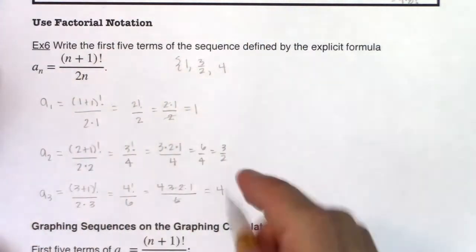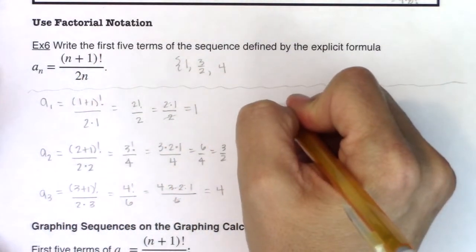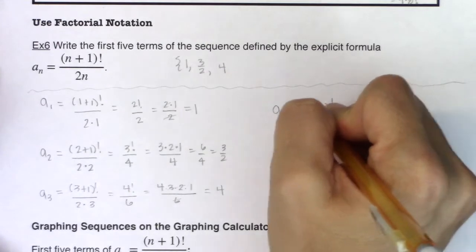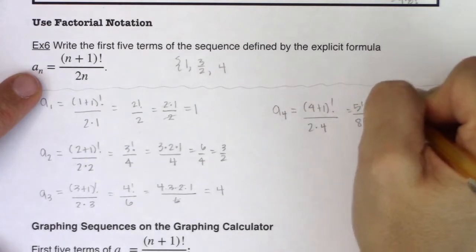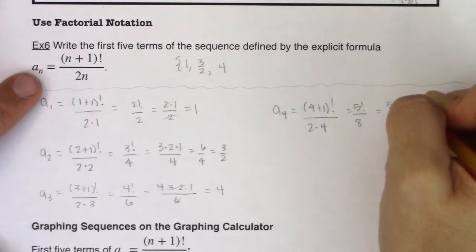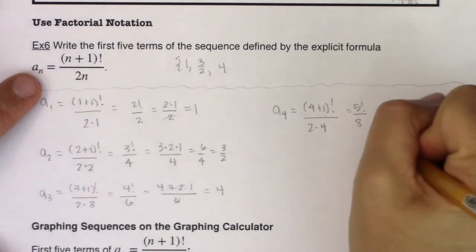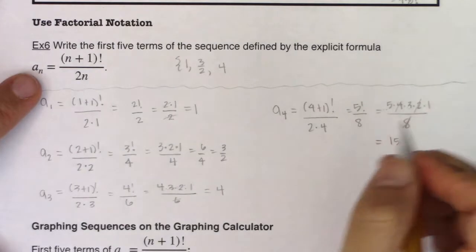Now the directions said find the first 5 terms. So let's continue on here. So we're going to go a sub 4. That will be equal to (4+1)! over 2 times 4. So that is now 5! over 8. So we have 5 times 4 times 3 times 2 times 1 over 8. Well, I can see the 8 here. I've got a 4 and a 2. That's going to cancel with the 8. I told you with these factorials, lots of stuff starts to cancel.